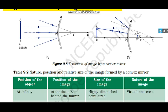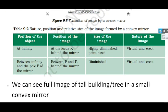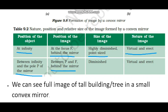These are the two cases, and they can be summarized in tabular form. First case: object at infinity — position of image is at focus, behind the mirror, size is point-sized and highly diminished, nature is virtual and erect. Second case: object between infinity and pole — position of image is between pole and focus, behind the mirror, size is diminished, and nature is virtual and erect.